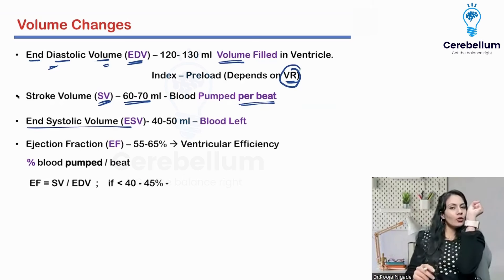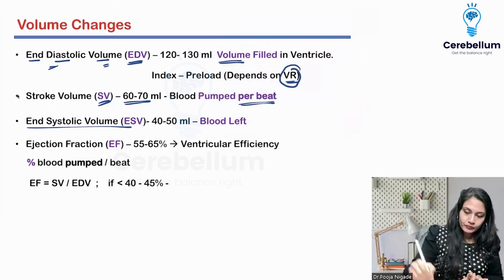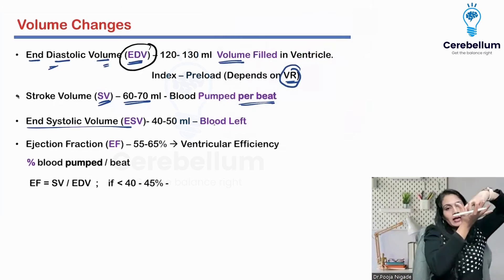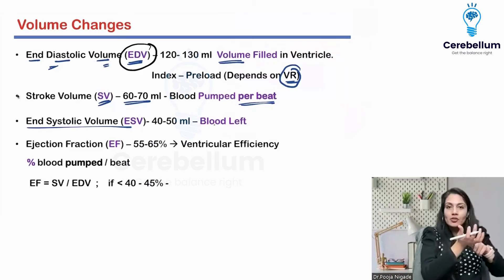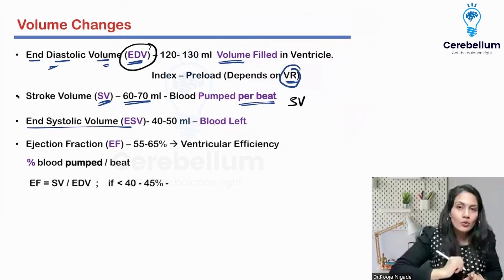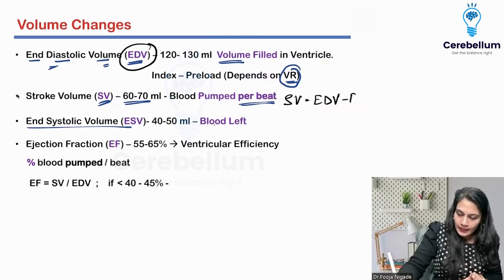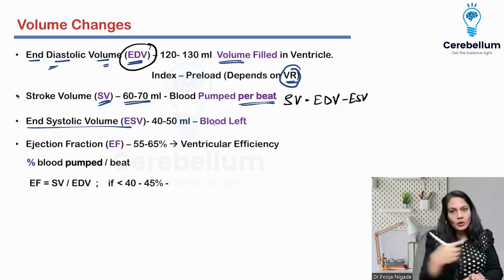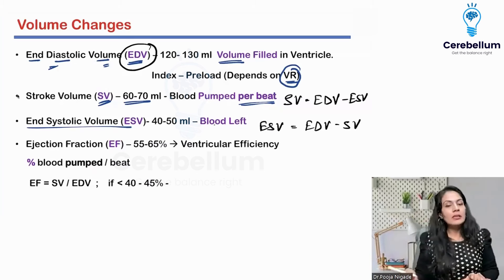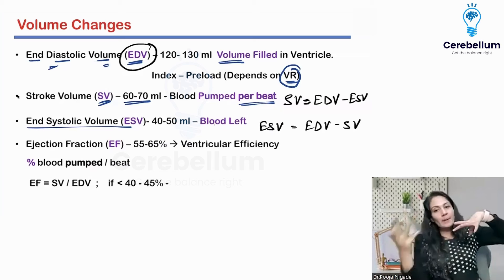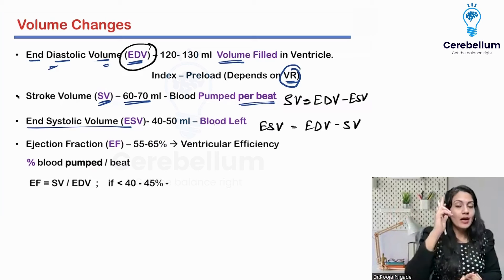End systolic volume — at the end of systole, that means once contraction is complete, whatever volume is left inside the ventricle is called end systolic volume. See carefully: EDV is how much blood came in during diastole. The amount that left is the stroke volume. What remains after the stroke volume is the ESV. So the formula: SV = EDV − ESV, and rearranging, ESV = EDV − SV.